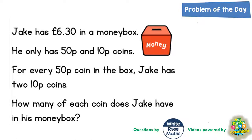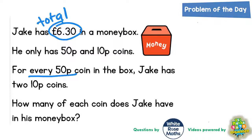Welcome, problem solving fans, to another problem of the day. This one is all about money in a money box. Jake has got £6.30 in a money box — that's his total. He's got 50p and 10p coins, and for every 50p coin he has in the box, he's got 2 ten-pence coins. How many of each coin does Jake have? All of these 50ps and 10ps have got to add up to £6.30.